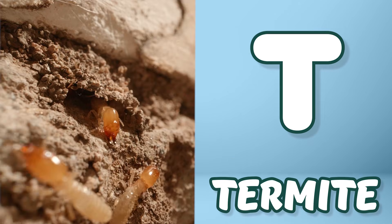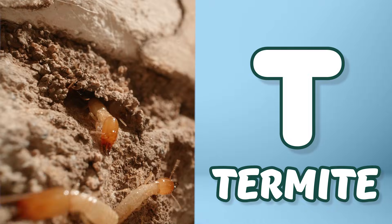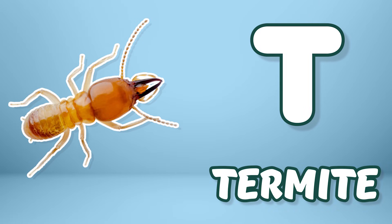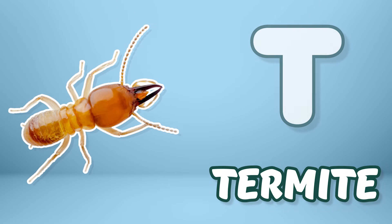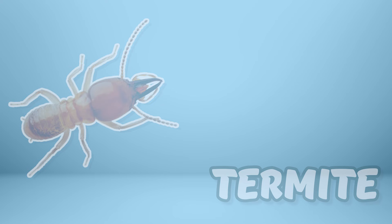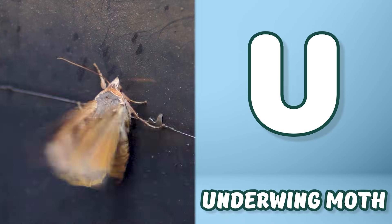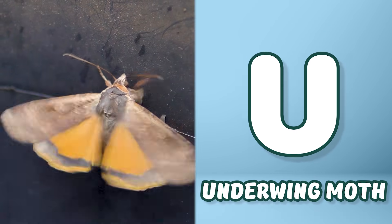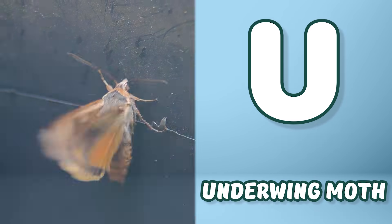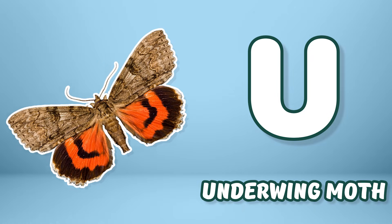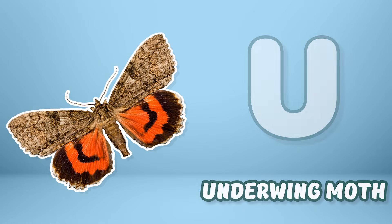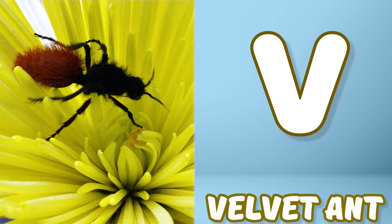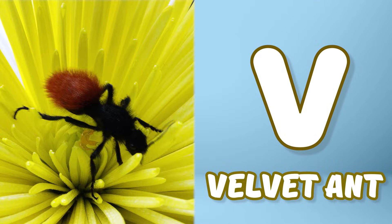T is for termite. T. Termite. T is for termite. T. U is for underwing moth. A. Underwing moth. U is for underwing moth. A. V is for velvet ant. V.